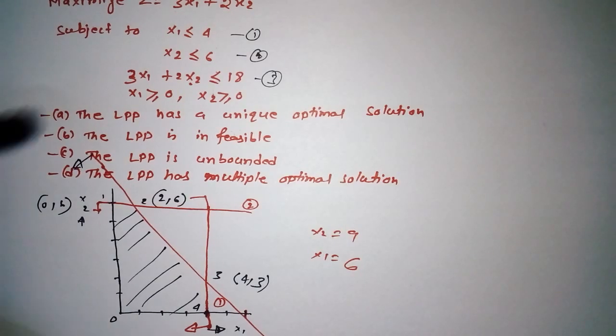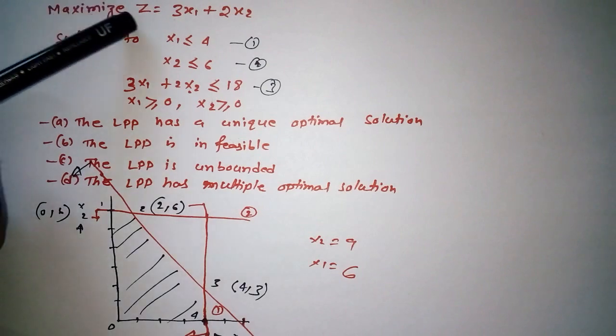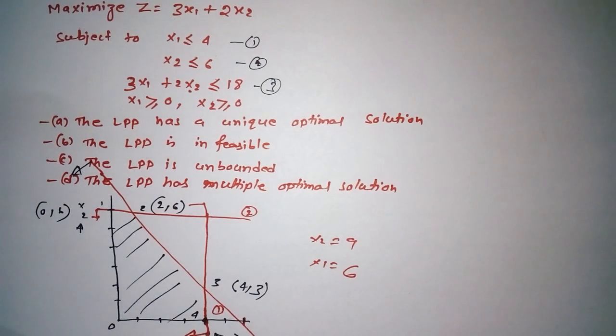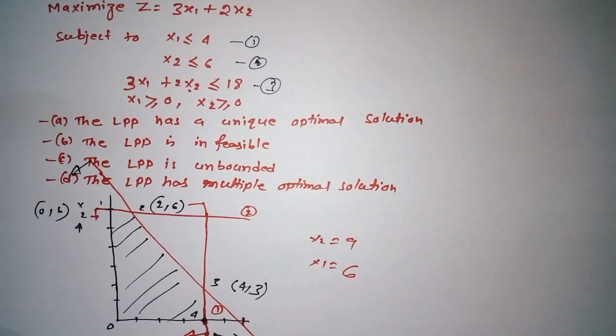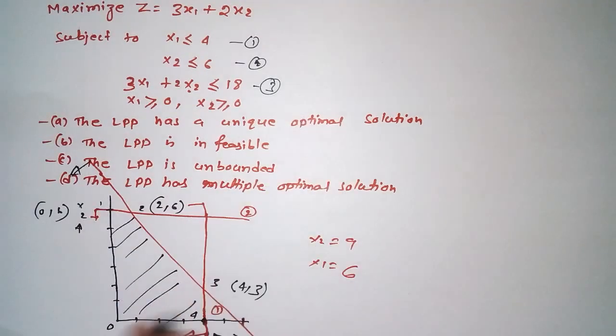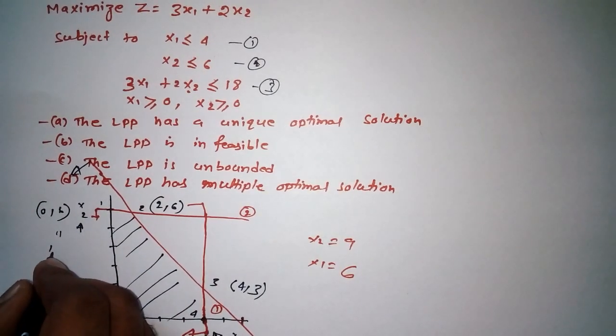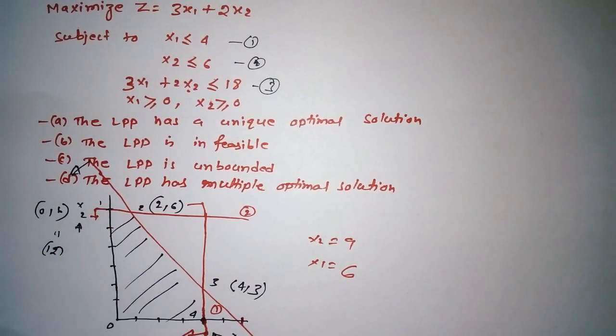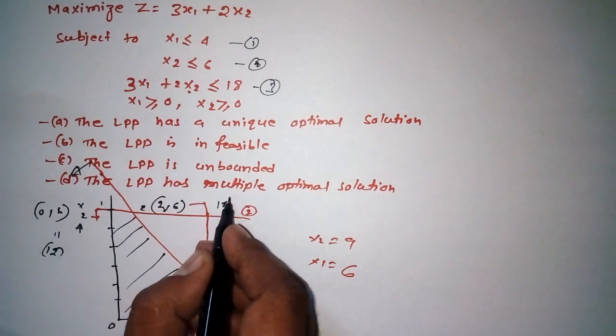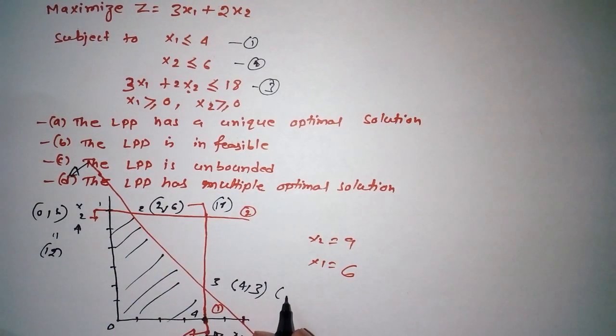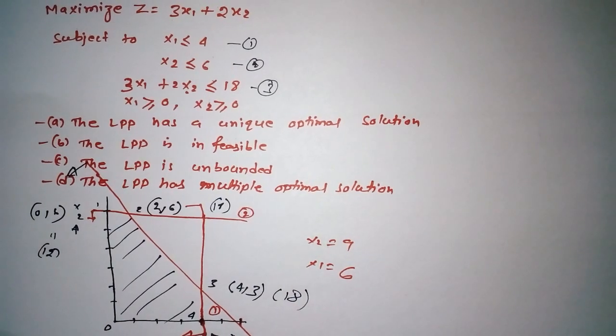If I put all these point values in the objective function to find the maximum value, let's calculate. At (0, 6): 2×6 = 12, so we get 18. At (4, 3): 3×4 = 12 plus 2×3 = 6, that's 18. At (2, 6): also 12. We're getting multiple points with the same maximum value.